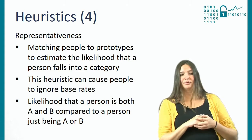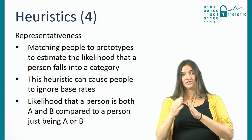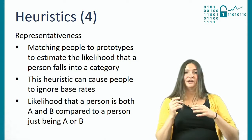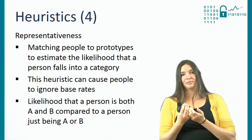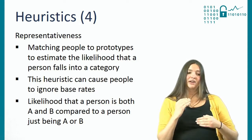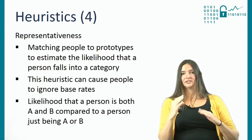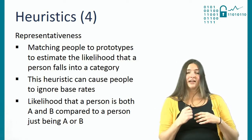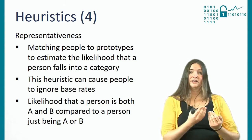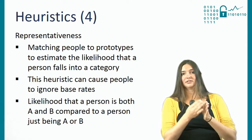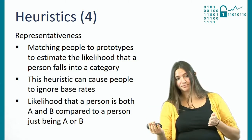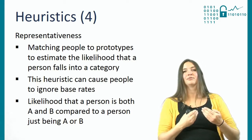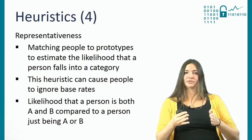Another group of people will be asked what is the likelihood that this person is a Dutch psychologist. Because all of the characteristics described might fit the view of a Dutch psychologist, people are likely to overestimate the chance that this person is a Dutch psychologist. Although we know from base rates that the likelihood of someone being a psychologist is higher than being a psychologist plus something else — being Dutch. So this heuristic can cause people to ignore base rates and overestimate the chance that someone belongs to a certain category.